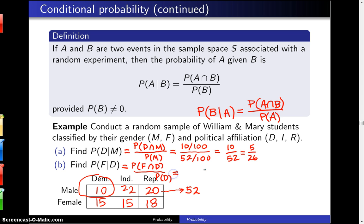And the probability of female and Democrat, that's right here. That's 15 out of 100 divided by the probability of being a Democrat. Well, that's going to be the sum of these two numbers right here. 10 plus 15 is 25 over 100.